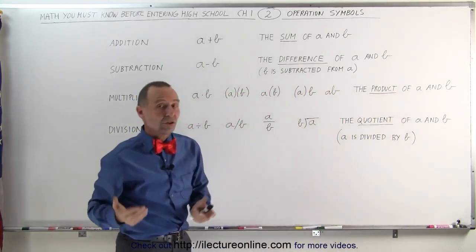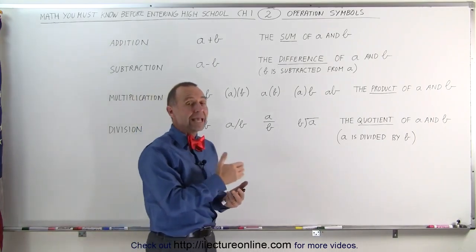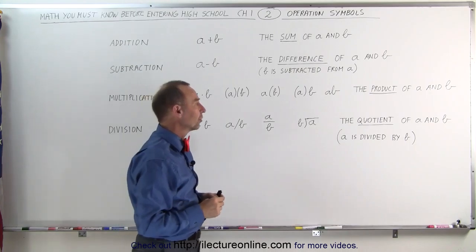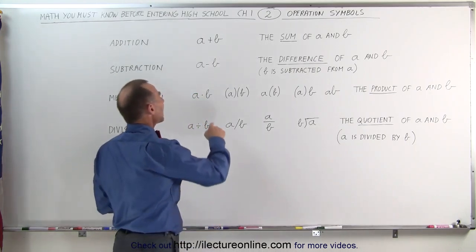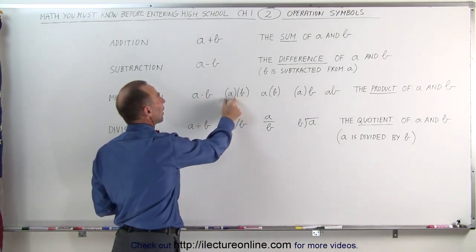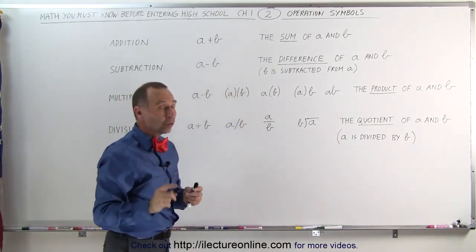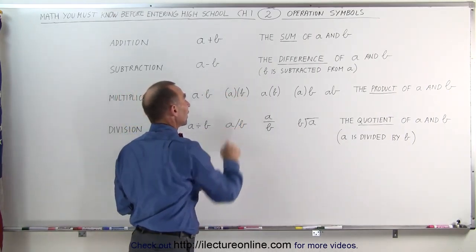In this case, the order doesn't matter. You can say the product of a and b or the product of b and a and you get the exact same result. Other ways of writing a times b is putting parentheses around the a and parentheses around the b with nothing in between. That also means that a is multiplied with b.